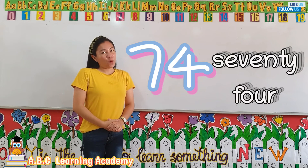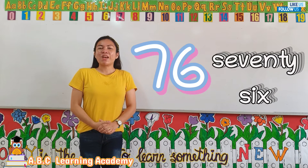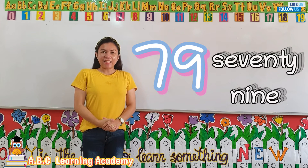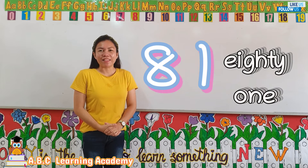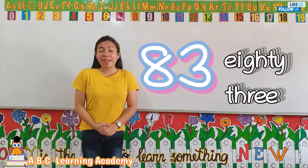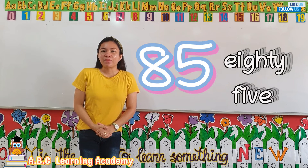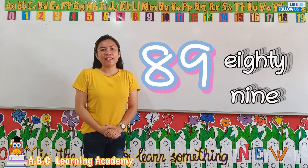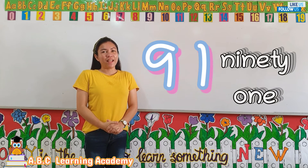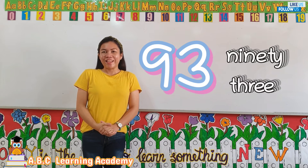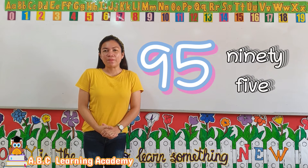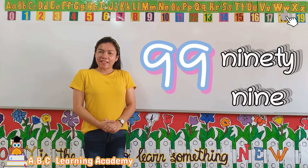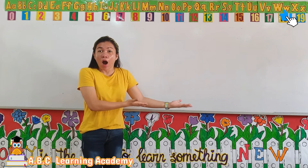73, 74, 75, 76, 77, 78, 79, 80, 81, 82, 83, 84, 85, 86, 87, 88, 89, 90, 91, 92, 93, 94, 95, 96, 97, 98, 99, 100. Faster?